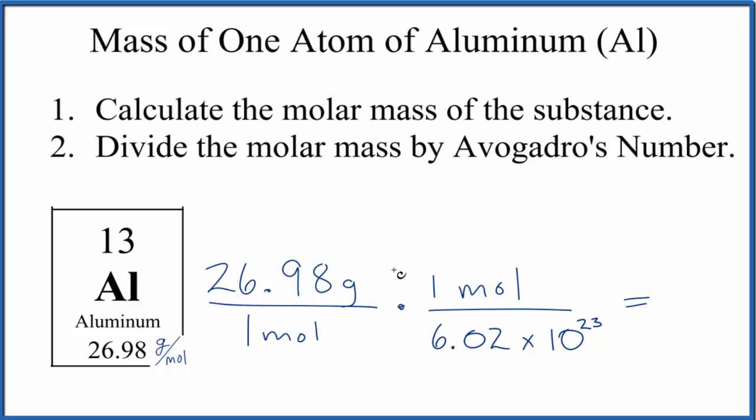When we do the math, we have moles on the bottom and the top, they'll cancel out and leave us with grams, so we know we did it right. Essentially all we're doing is we're dividing the atomic mass by Avogadro's number, but this is just a good check.